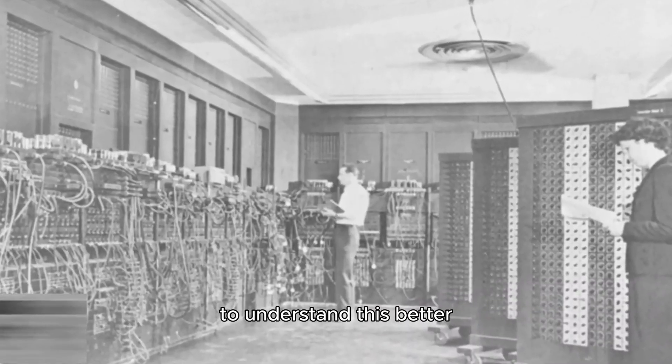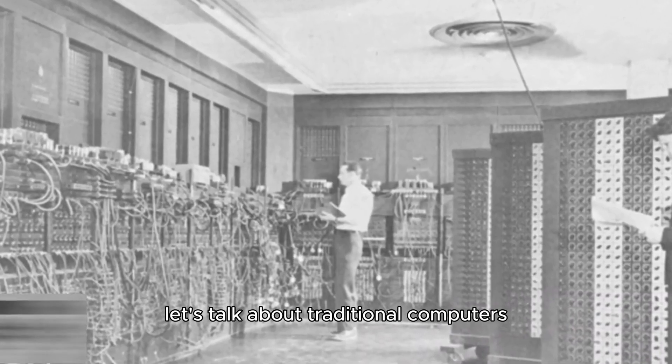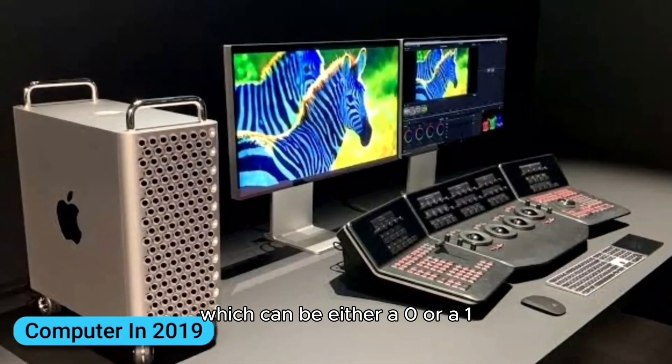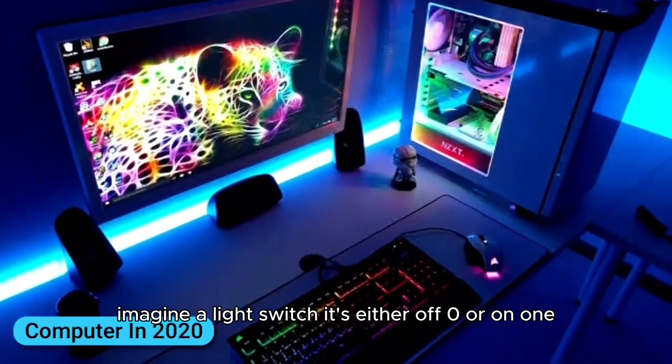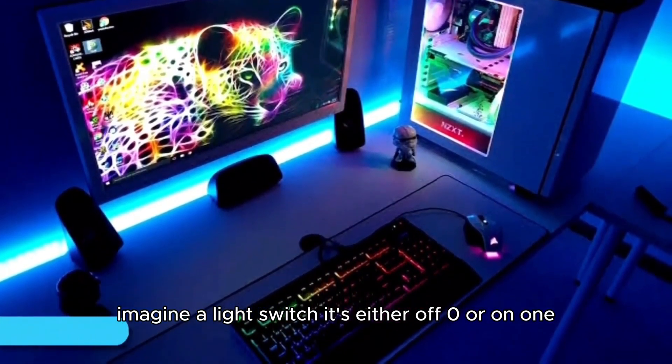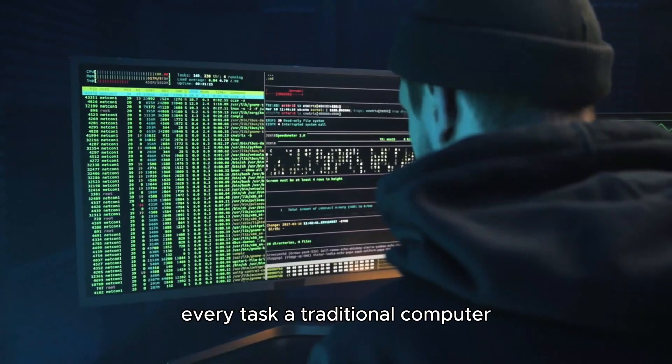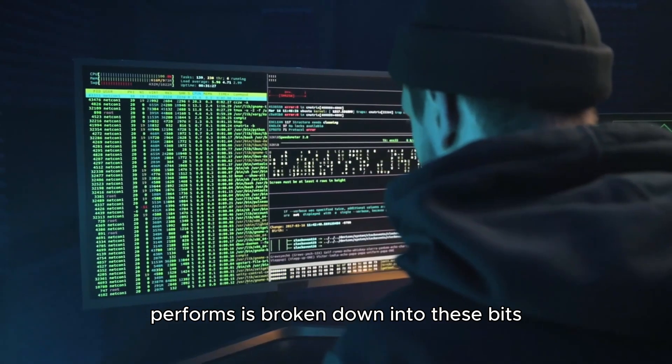To understand this better, let's talk about traditional computers. They use bits as the smallest unit of data, which can be either a zero or a one. Imagine a light switch - it's either off (zero) or on (one). Every task a traditional computer performs is broken down into these bits.